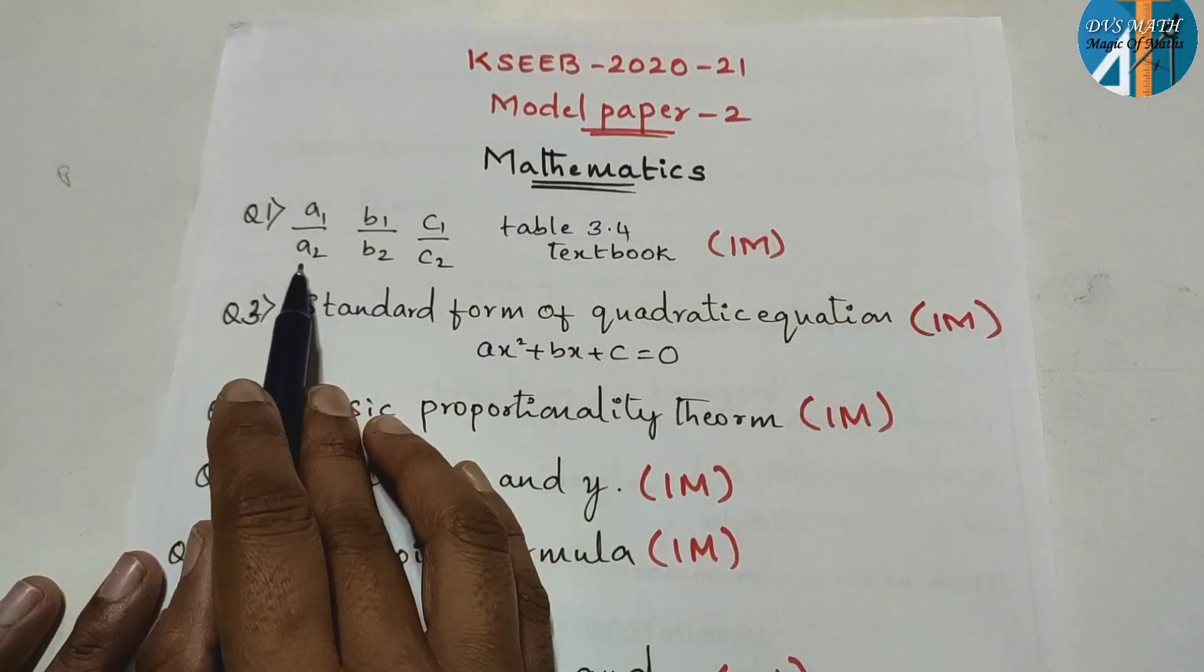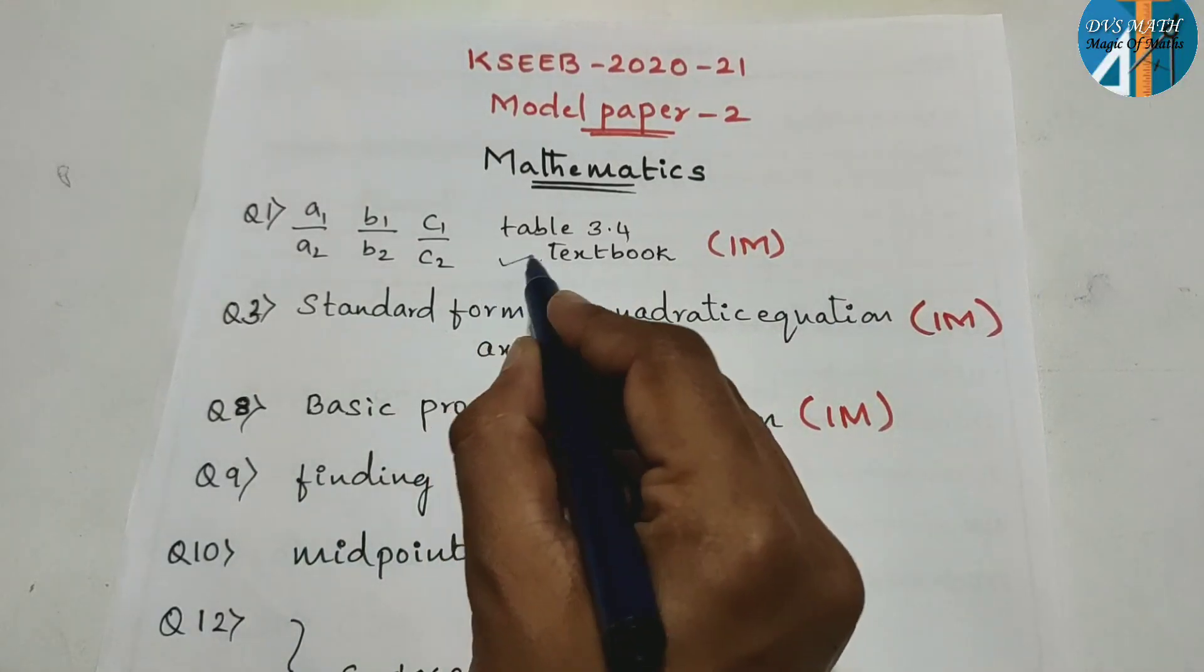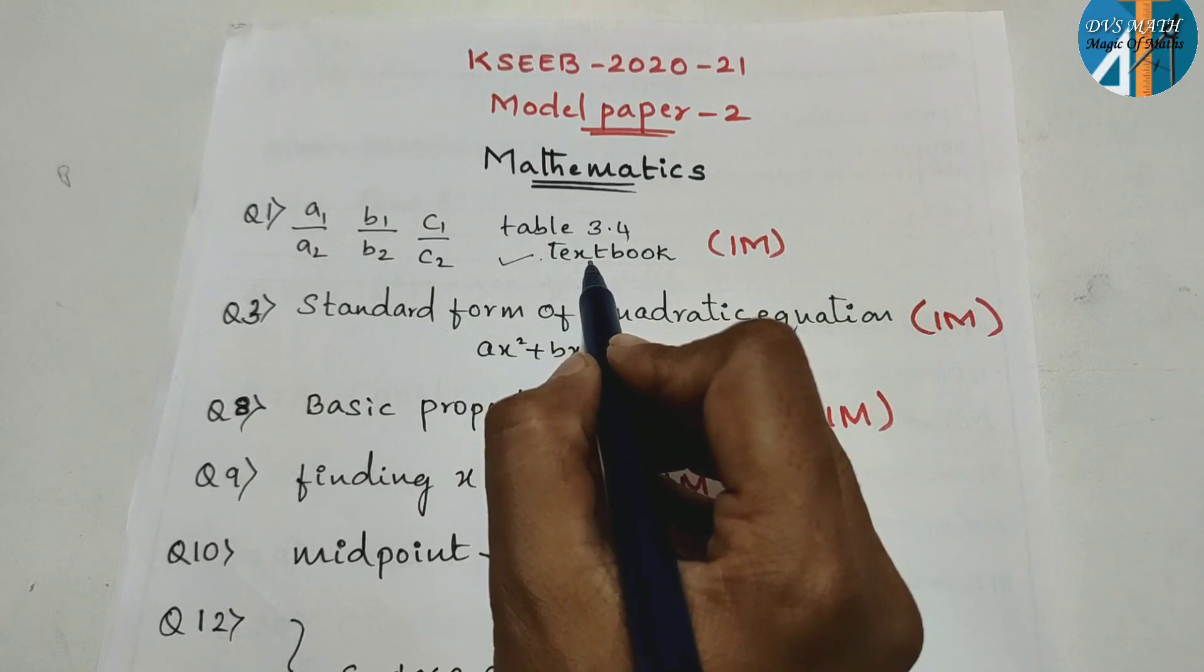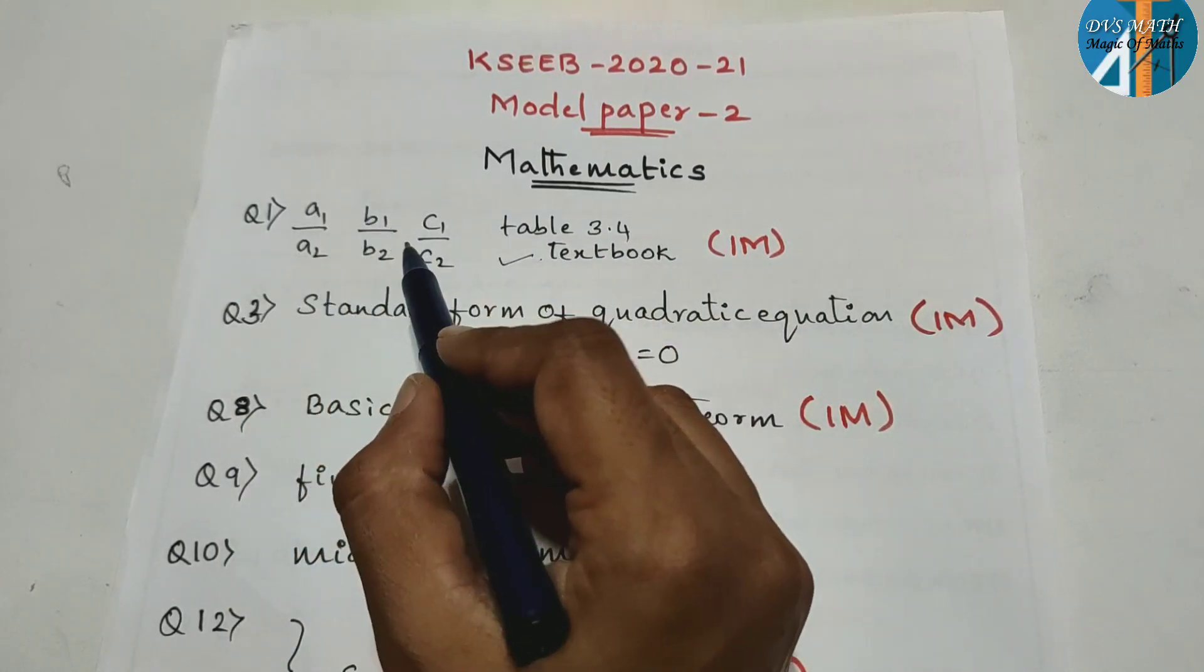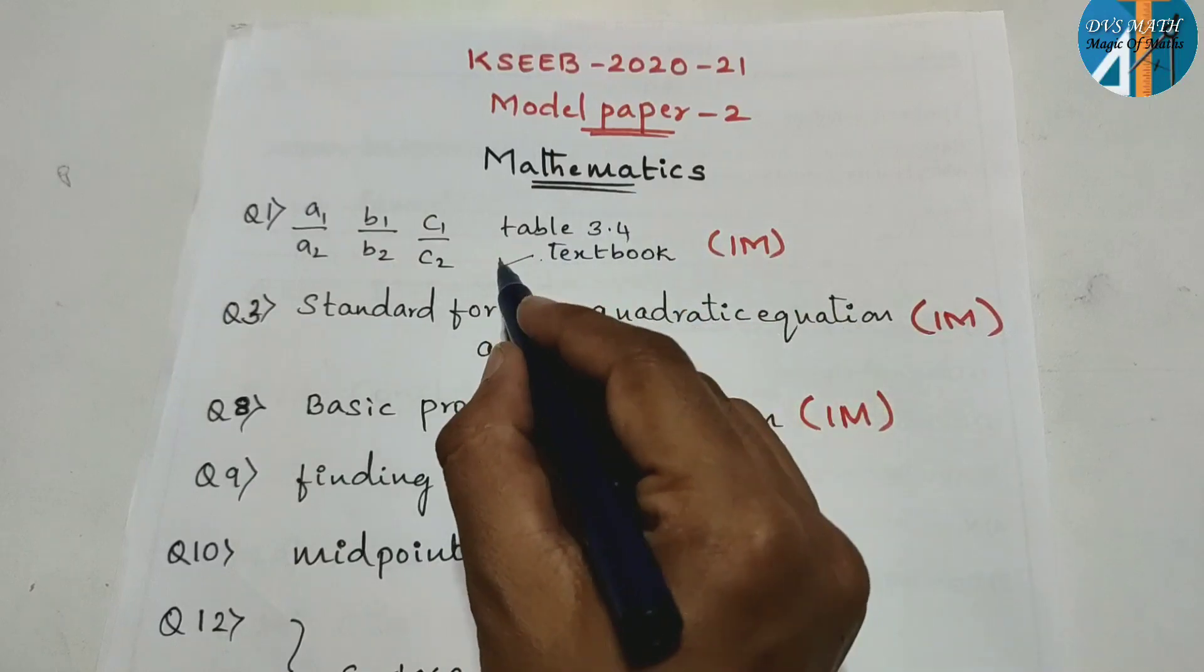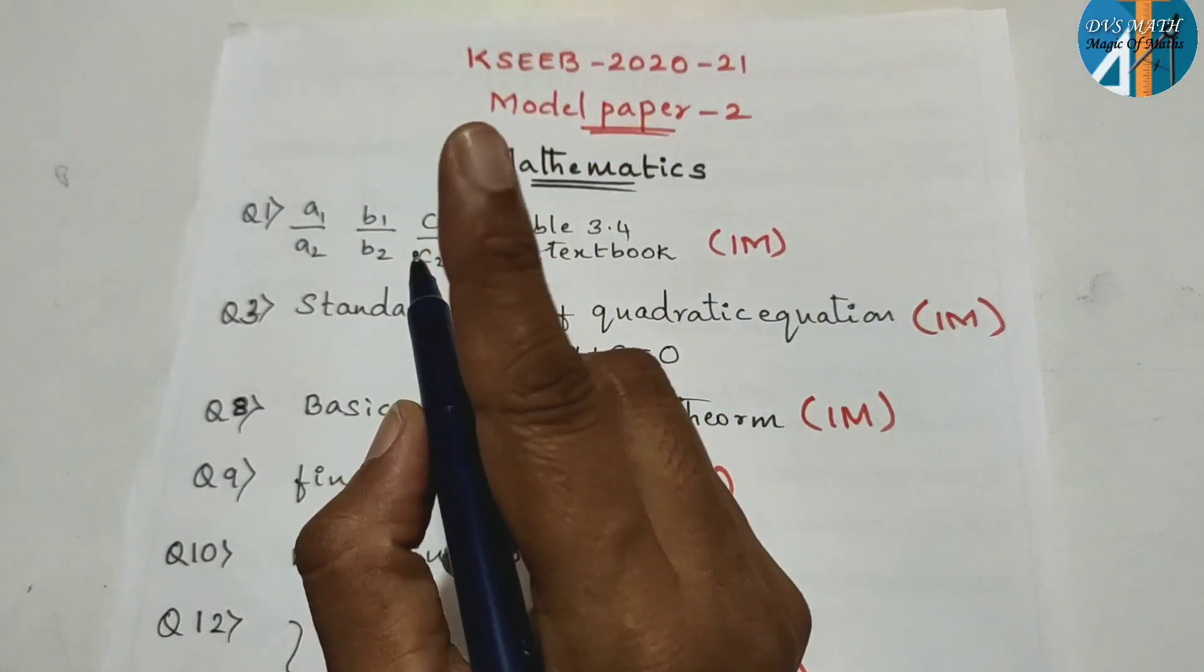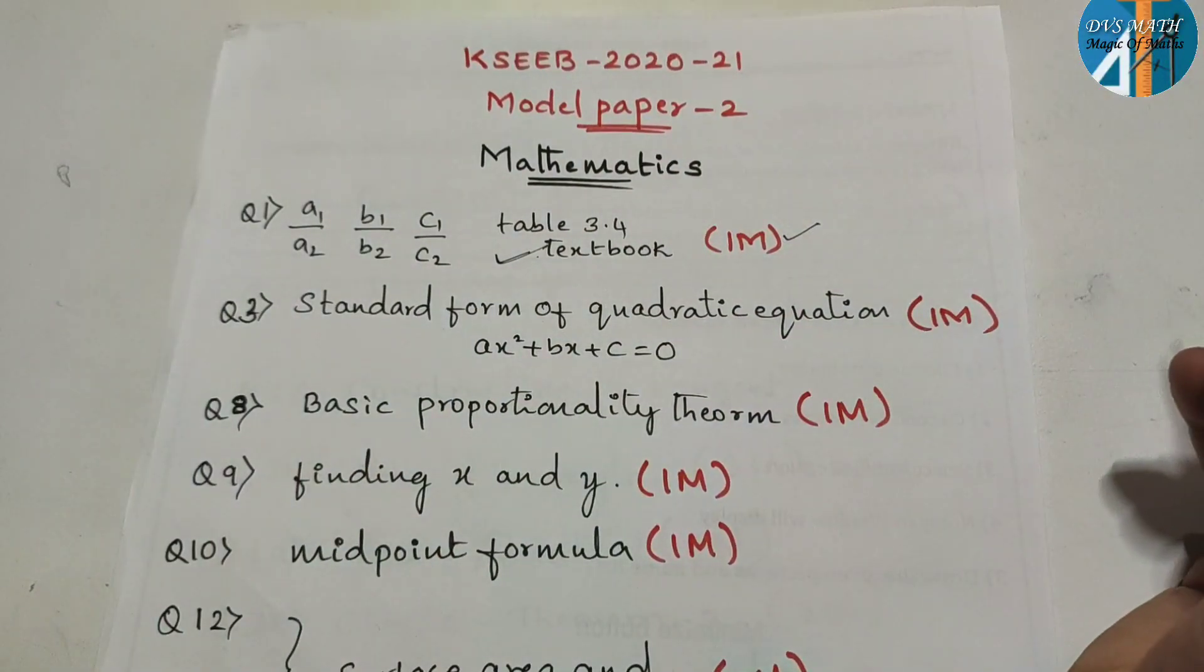We have talked about the last session. This question is related to table. In textbook 3.1 pair of linear equations lesson, table 3.1. The relation between the coefficient a1 by a2, b1 by b2, c1 by c2 related. There is one question related to table. If you have the model paper 1, it is made in this. So this pattern is going to change. Same pattern is made.